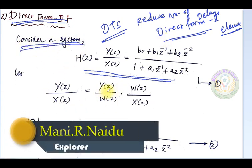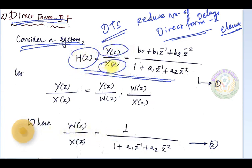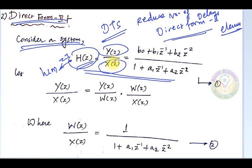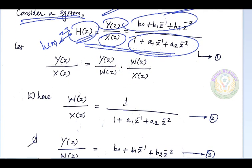Consider a system like we saw in Direct Form 1. H(z) is the system function, equal to Y(z) divided by X(z). It is the Z-transform of the impulse response, and it is the ratio of two polynomials. We are going to introduce a new intermediate variable w(z) here.